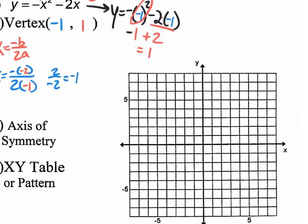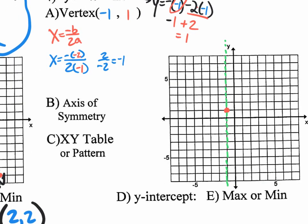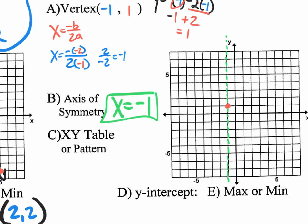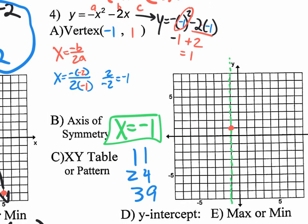Let's graph the vertex at negative 1, 1: negative 1 on the x, 1 on the y. Then draw the axis of symmetry right through it. State the equation of the axis of symmetry: x equals negative 1. Then we're going to use the pattern 1-1, 2-4, 3-9. The a value is negative 1, so the parabola is opening down.